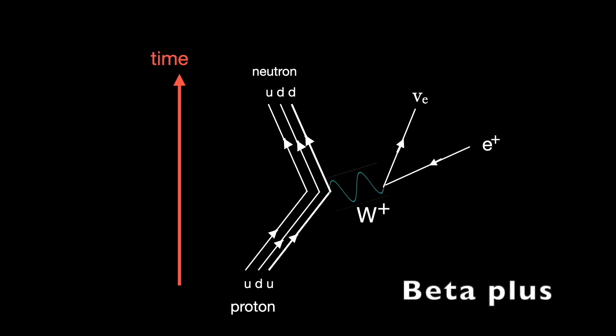Beta plus emission is almost the reverse of this. One of the up quarks emits a W plus boson, producing a positron and a neutrino. That boson changes to a down quark, so the proton becomes a neutron.